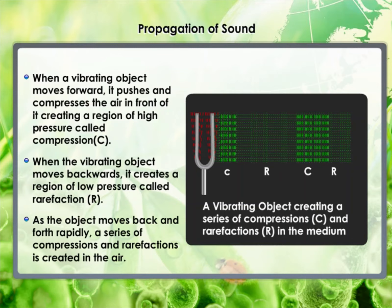When the vibrating object moves backwards, it creates a region of low pressure called rarefaction. As the object moves back and forth rapidly, a series of compressions and rarefactions is created in the air — these make the sound wave that propagates through the medium. Compression is the region of high pressure and rarefaction is the region of low pressure. Propagation of sound can be visualized as propagation of density variations or pressure variations in the medium.